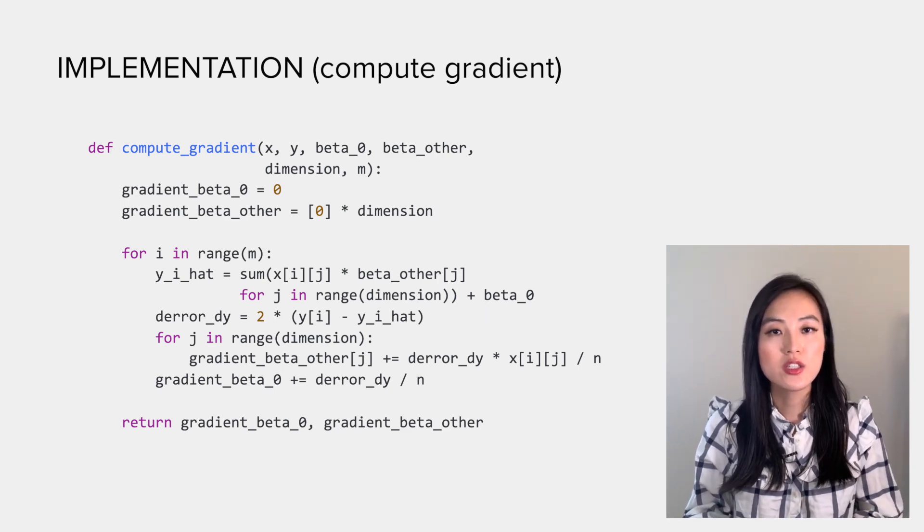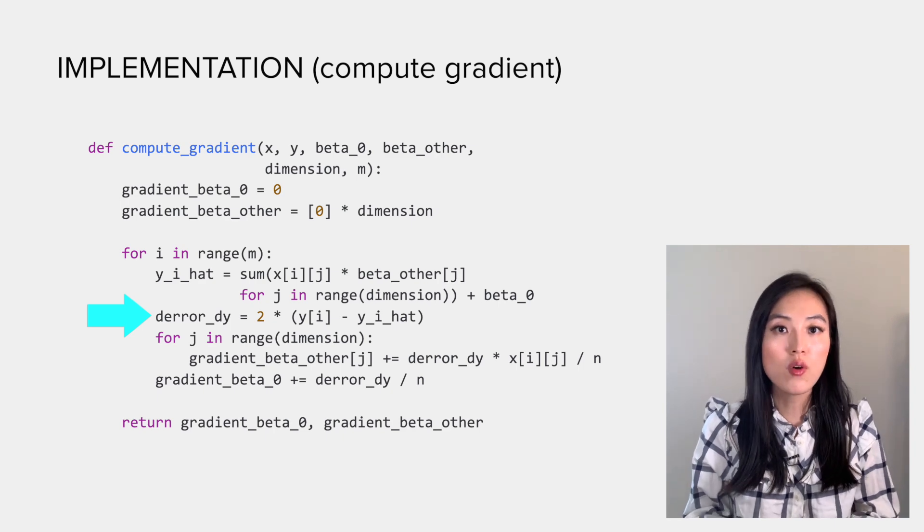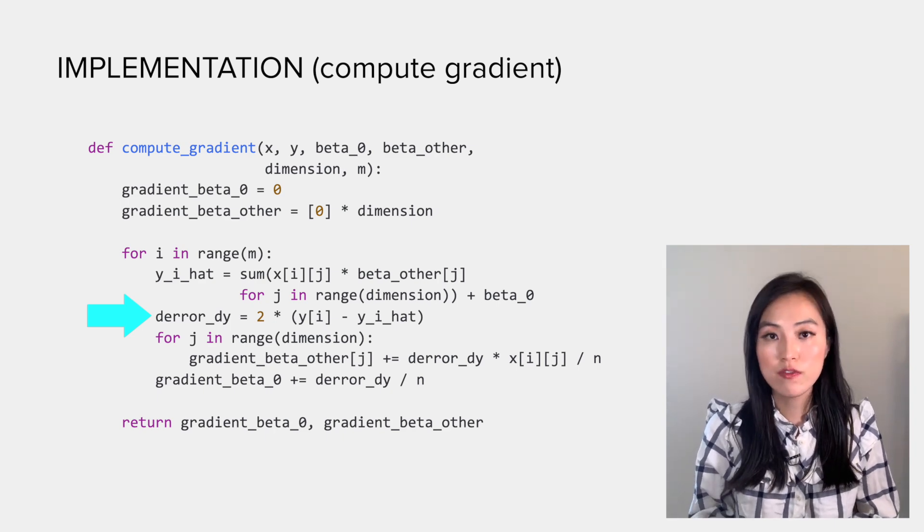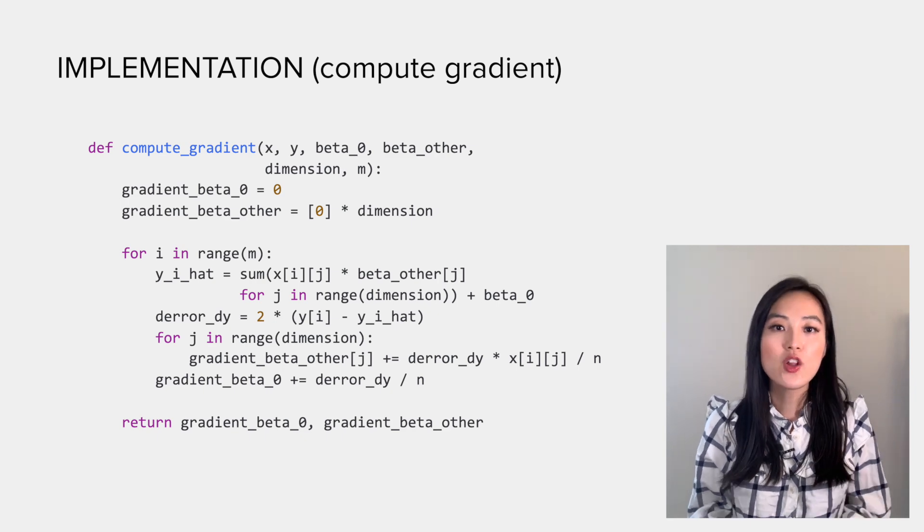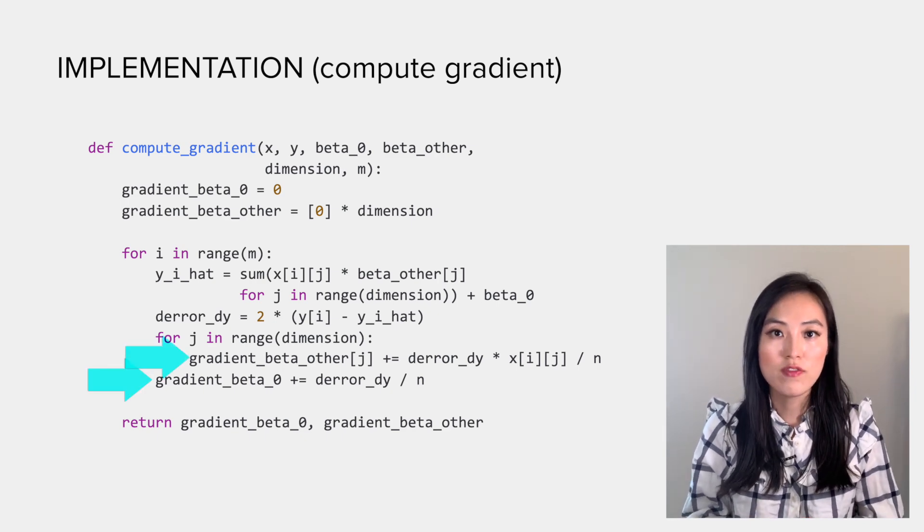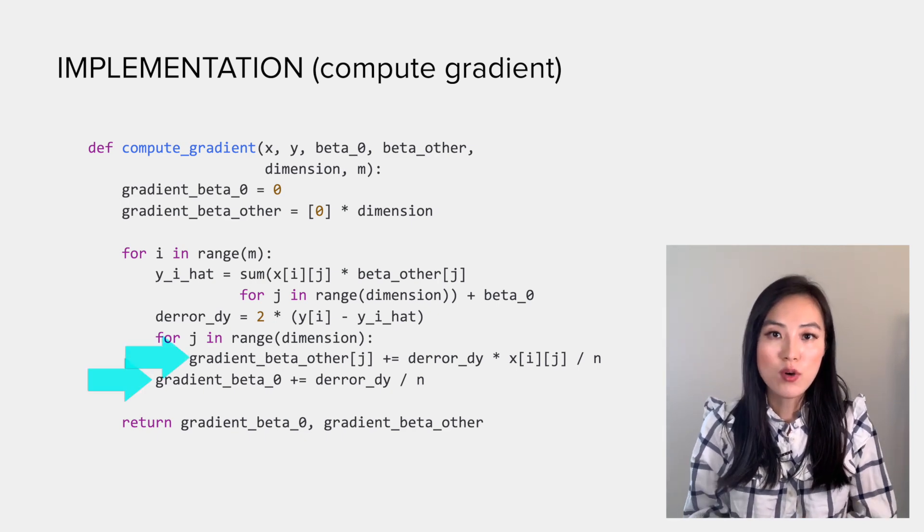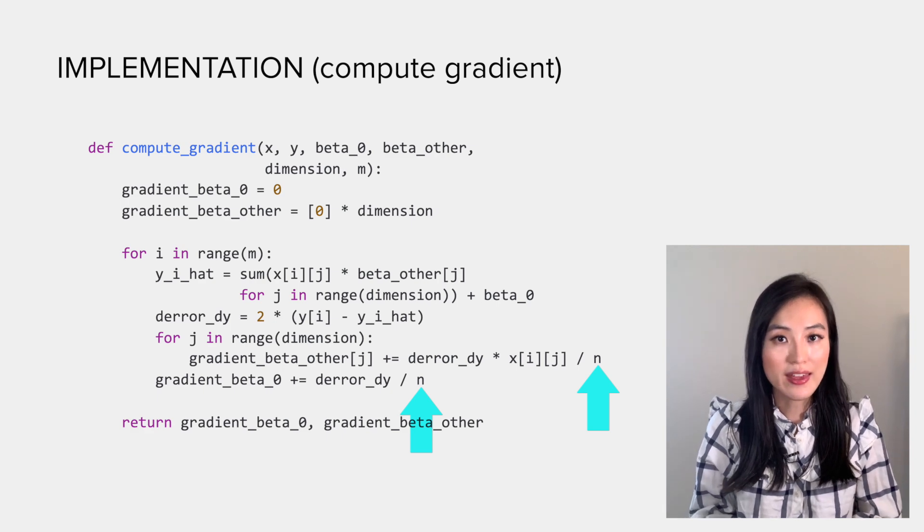Afterwards, we can obtain the derivative of the error over y, which is two times the difference between observation and prediction. Finally, we can get the gradients of betas for each data point. We divide the gradient by n, so the gradient computed at the end will be the average over all data points.